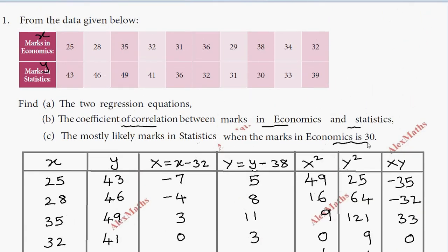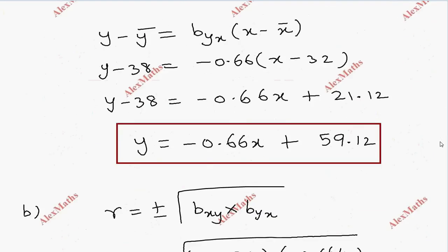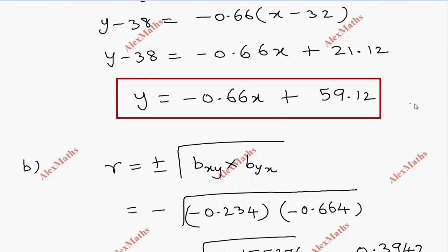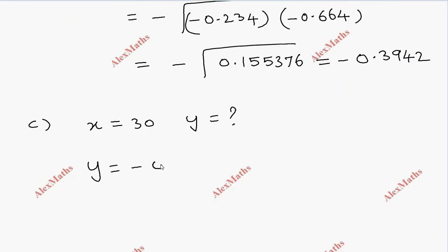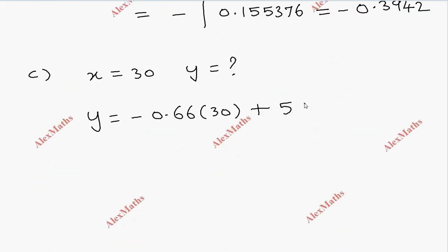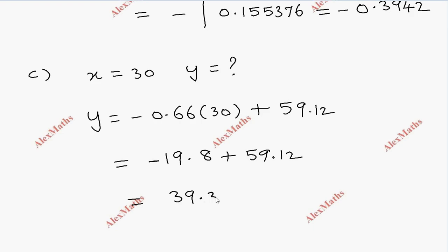Subdivision C: when economics marks x equals 30, find statistics marks. Using the regression equation y = −0.66x + 59.12, substitute x = 30: y = −0.66×30 + 59.12 = −19.8 + 59.12 = 39.32. So the predicted statistics marks are 39.32.